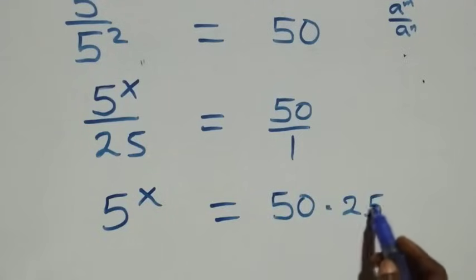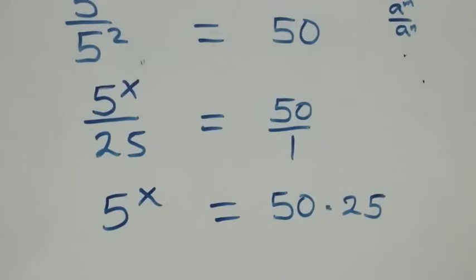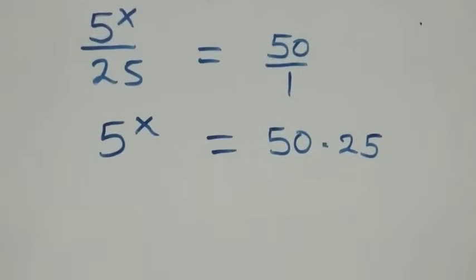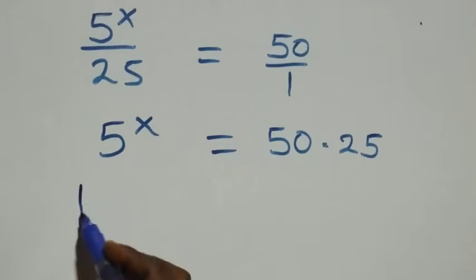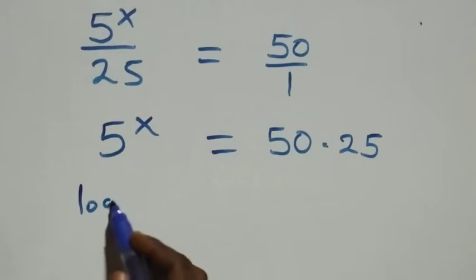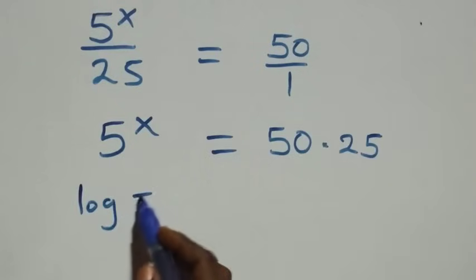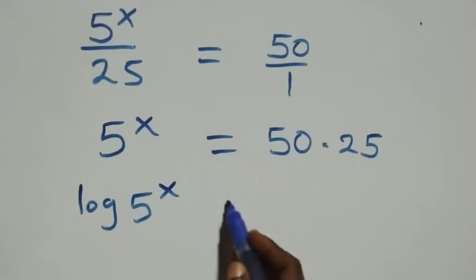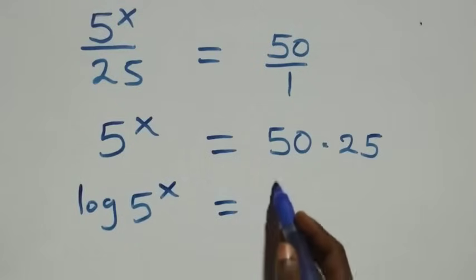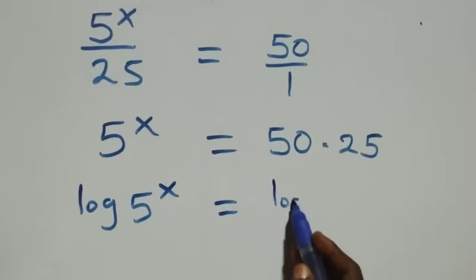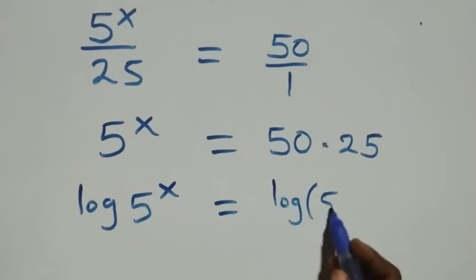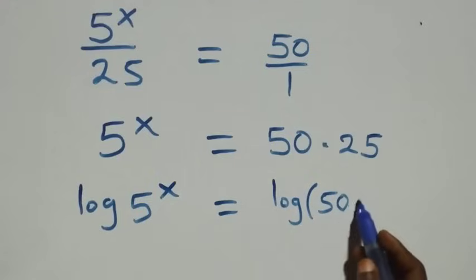Next step, we take the log on both sides. That is, here we have log of 5 raised to power x equals to log of 50 times 25.